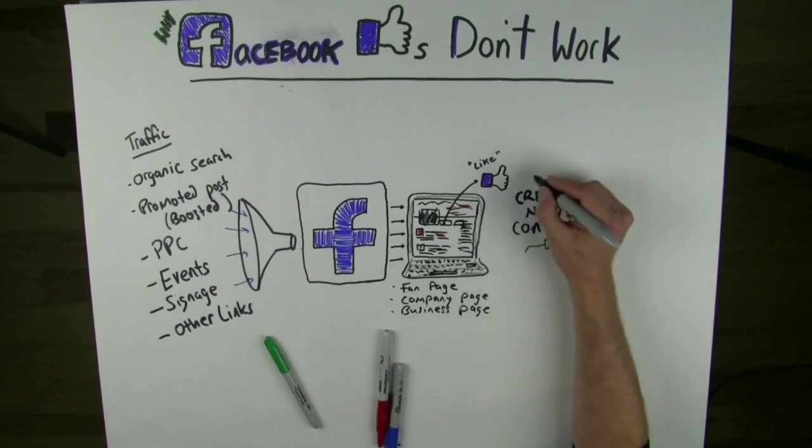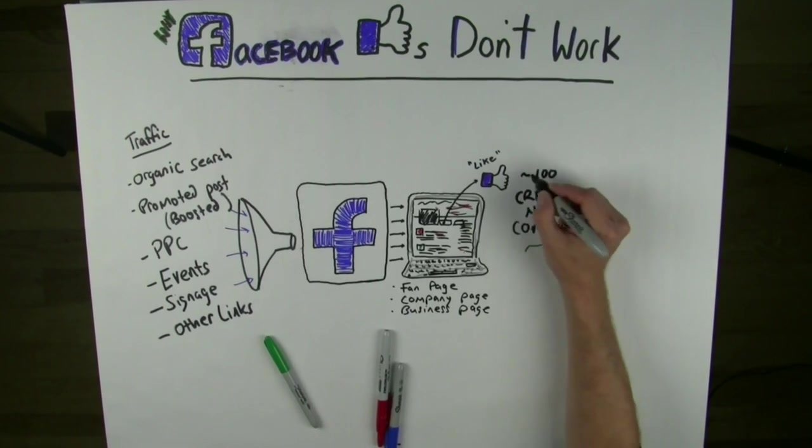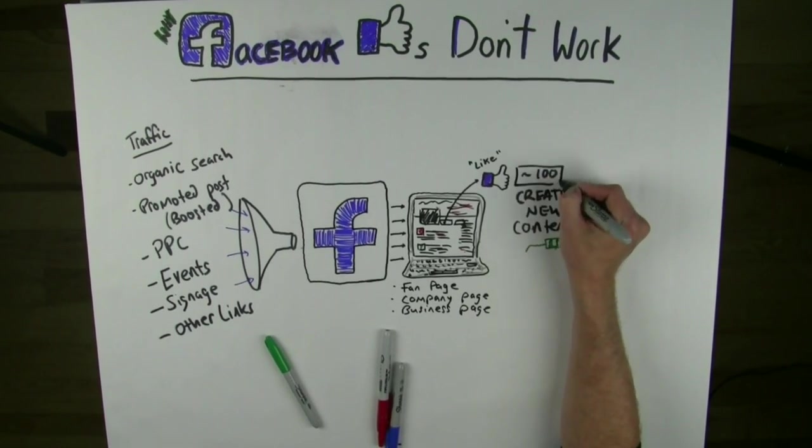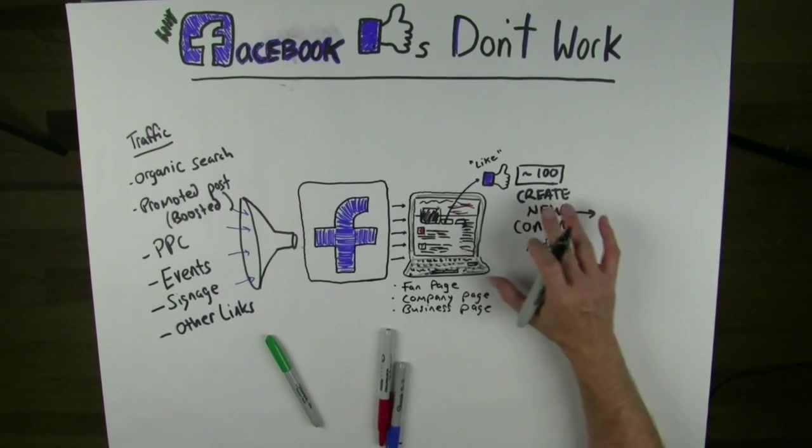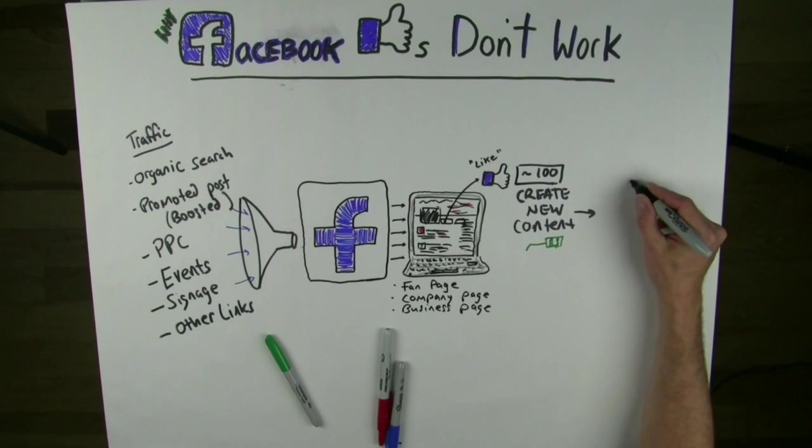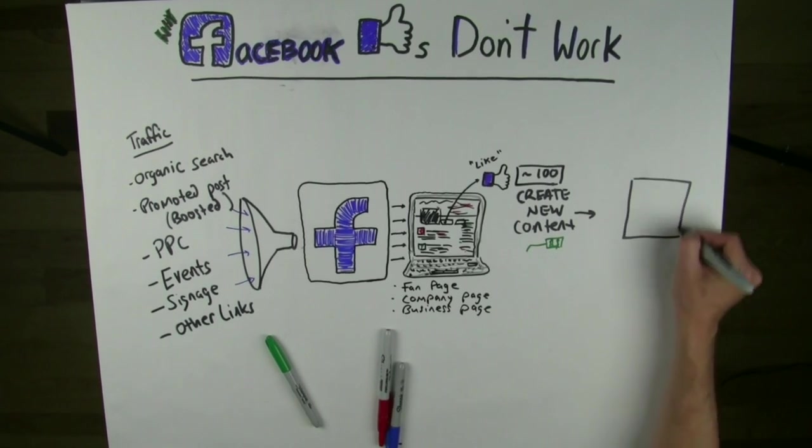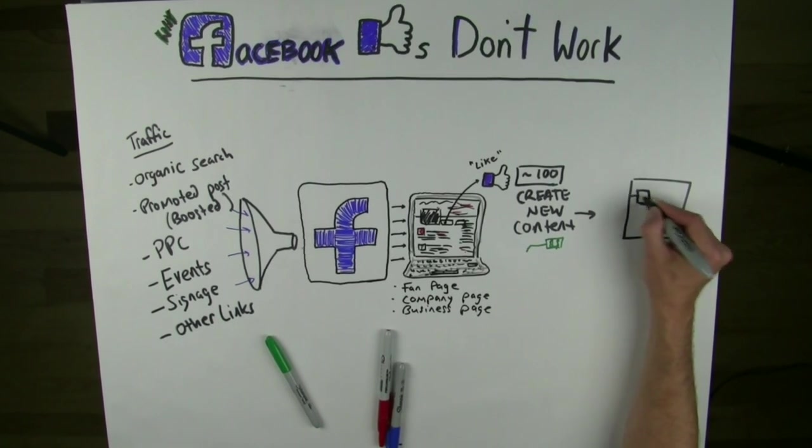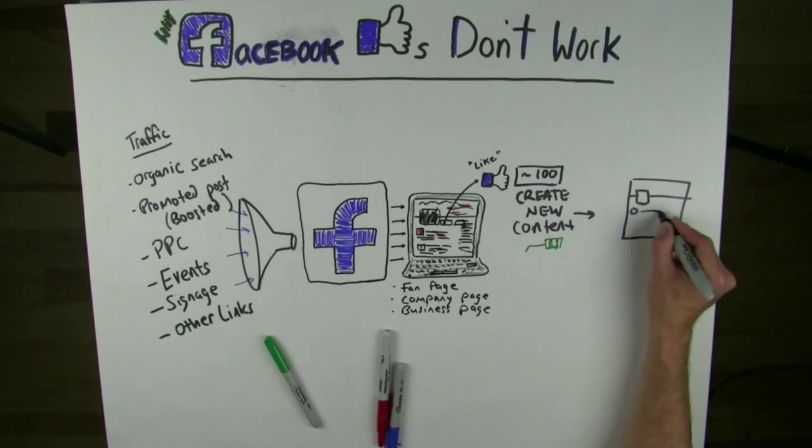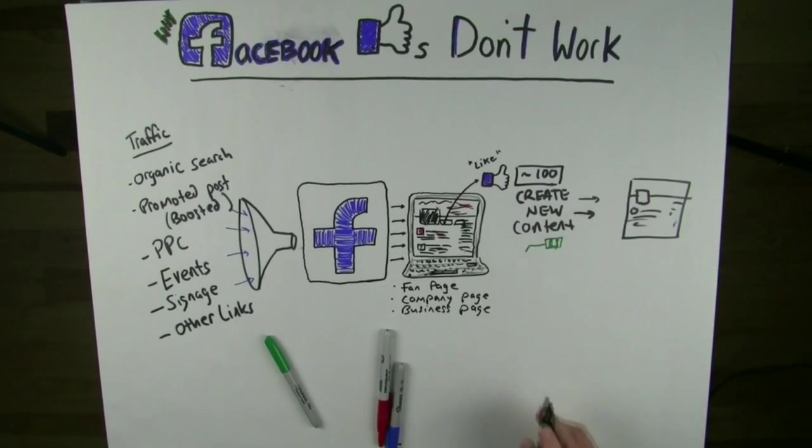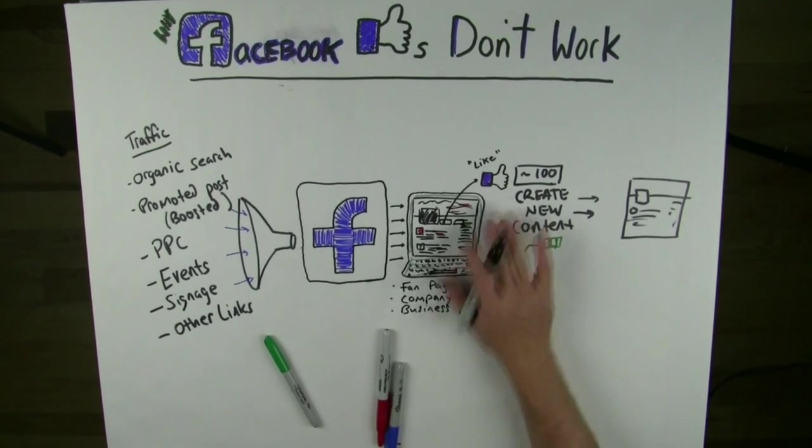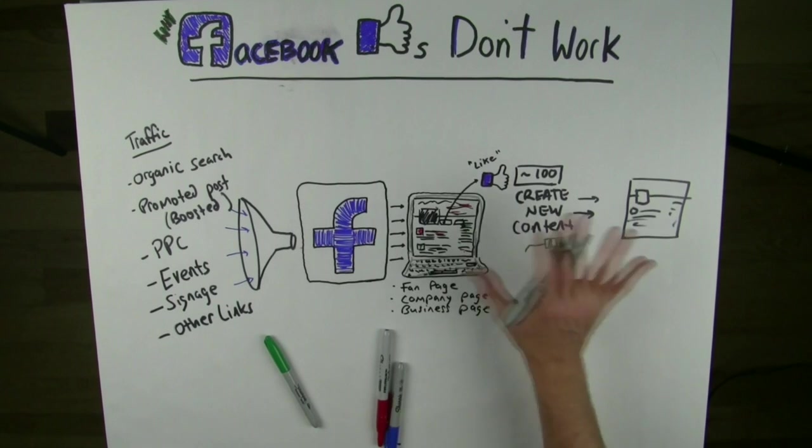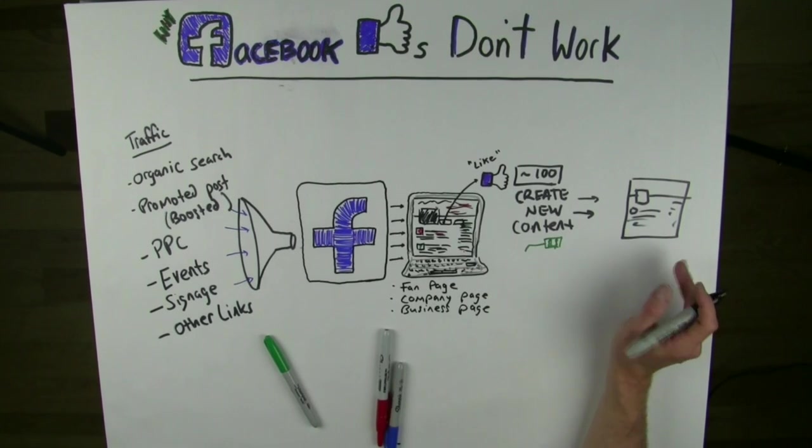Let's say you have about 100 of these precious little likes, whether it's 100 or 1000 doesn't really matter. What people don't realize is what actually shows up in the user stream. So this is my Facebook page here with all my posts and the stuff on the side. What actually gets here is a much lower percent of your likes than you actually have.